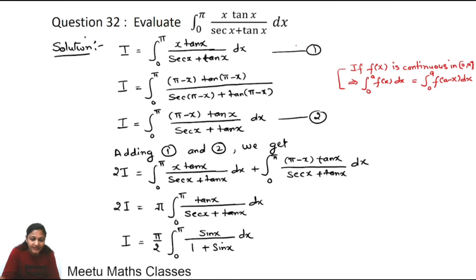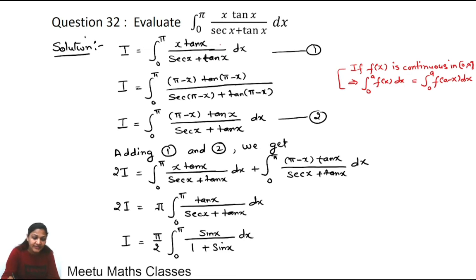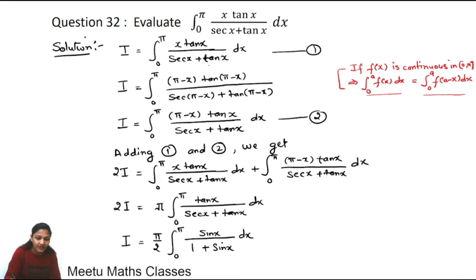To evaluate this integral, let I = integral from 0 to π of x·tanx/(secx + tanx) dx. We use the property of definite integrals: if the function is continuous on [0, a], then ∫₀ᵃ f(x)dx = ∫₀ᵃ f(a − x)dx. Here we replace x with π − x.